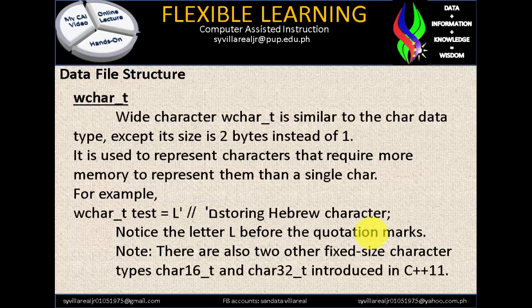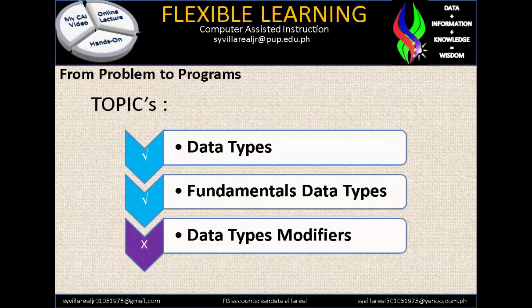wchar_t is a wide character. wchar_t is similar to the char data type except its size is 2 bytes instead of 1. It is used to represent characters that require more memory. For example, wchar_t test = L'\u05D0' (storing a Hebrew character). Note the letter L before the quotation mark. There are also two other fixed-size character types: char16_t and char32_t, introduced in C++.